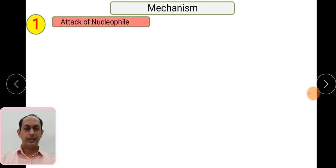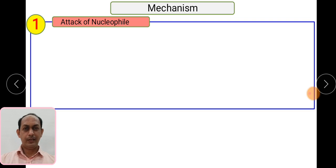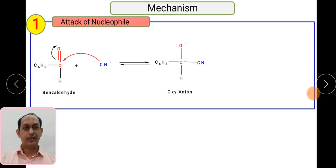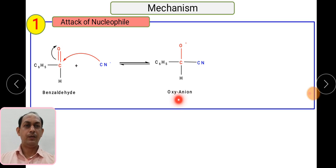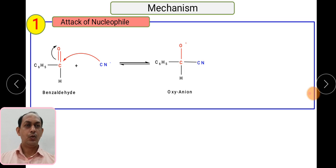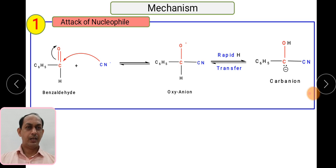The mechanism proceeds through three steps. In the first step, a nucleophilic attack takes place. The nucleophile in this case is the cyanide ion (CN⁻). Benzaldehyde has the structure C₆H₅–C(=O)–H. This carbonyl carbon is electron deficient and undergoes nucleophilic addition. So CN⁻ attacks this carbonyl carbon, the pi bond breaks, and an alkoxide (oxygen anion) is formed. The oxygen carries a negative charge while the cyanide group is added, forming a new C–CN bond.